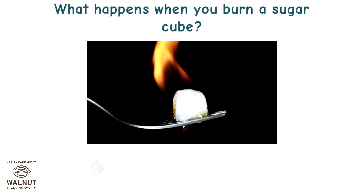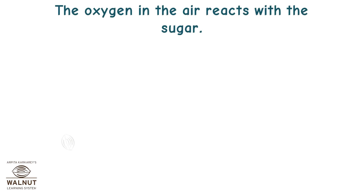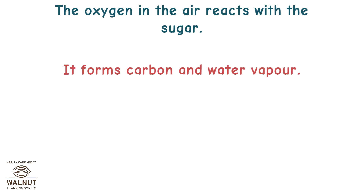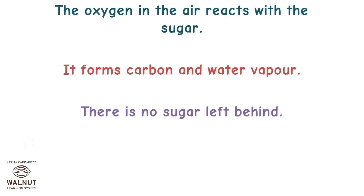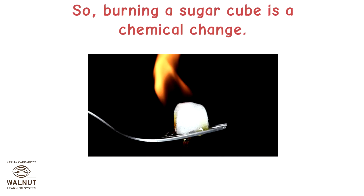What happens when you burn a sugar cube? Fire activates a chemical reaction between sugar and oxygen. The oxygen in the air reacts with the sugar, forming carbon and water vapor — there is no sugar left behind. It changes into a different substance. So burning a sugar cube is a chemical change.